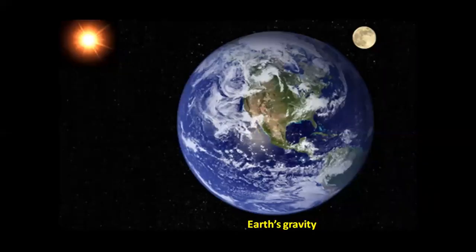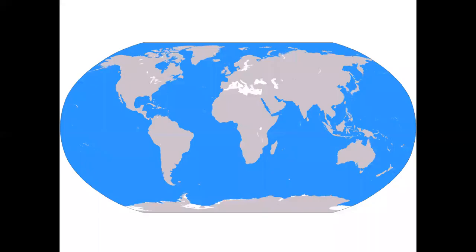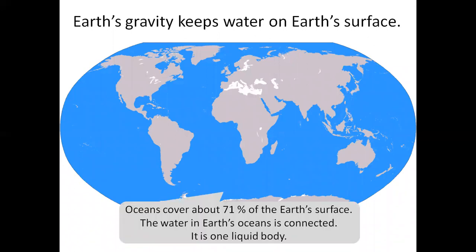We're now going to look at the gravity of Earth, the Moon's gravity, and the Sun's gravity. Earth's gravity keeps water on Earth's surface. Oceans cover about 71% of Earth's surface. The water in Earth's oceans is connected. It is one liquid body.